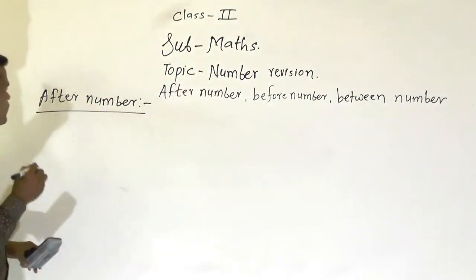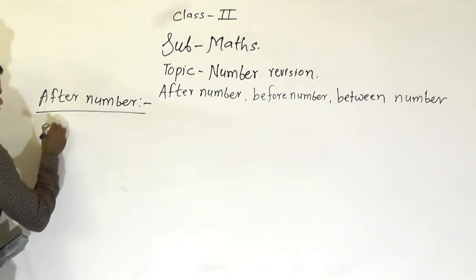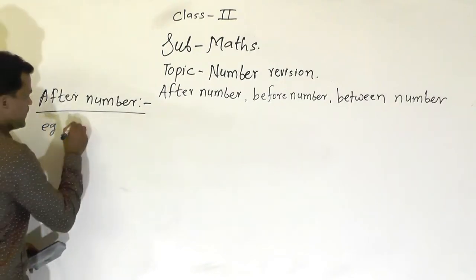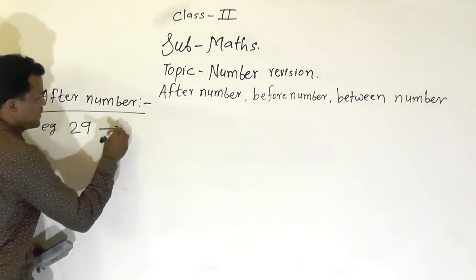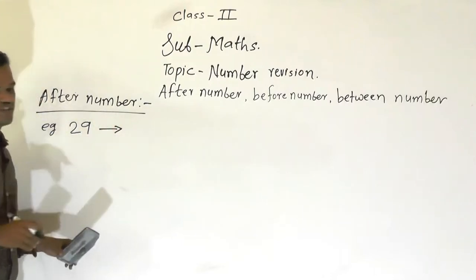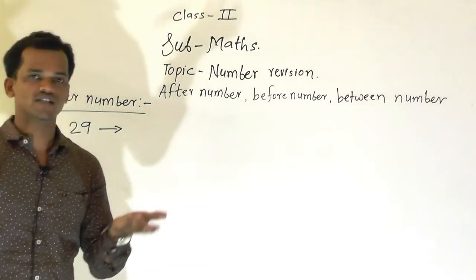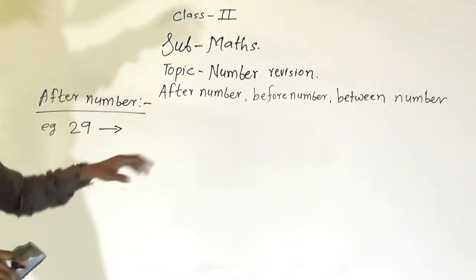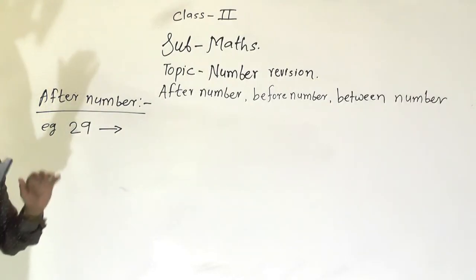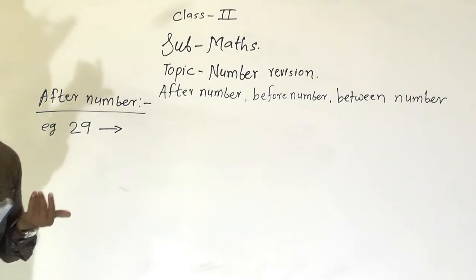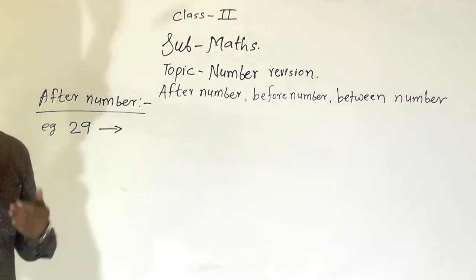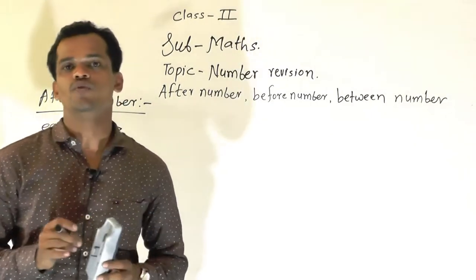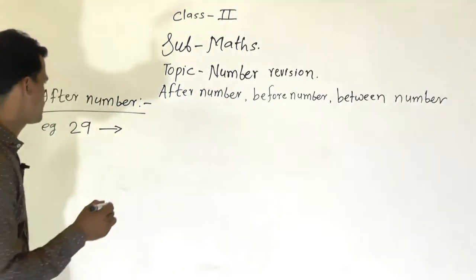Now we will see one example so you can understand. 29 is the given number. The question is: which is the next number, or the after number of 29? After 29, which number comes? That is 30. So the after number of 29 is 30.